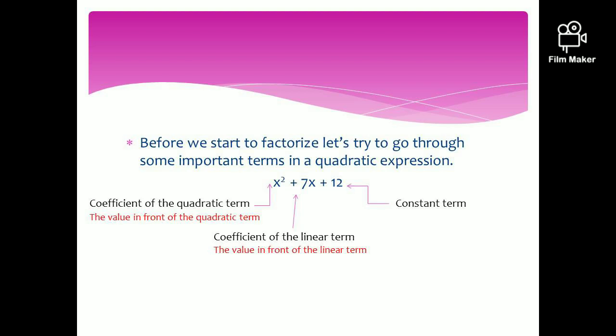The next term is the coefficient of the linear term. The linear term is the x term — that means without any powers. Therefore, the coefficient of x, or the linear term, in this expression would be 7. And the last term is the constant term — that is the term independent of the variable in the expression.